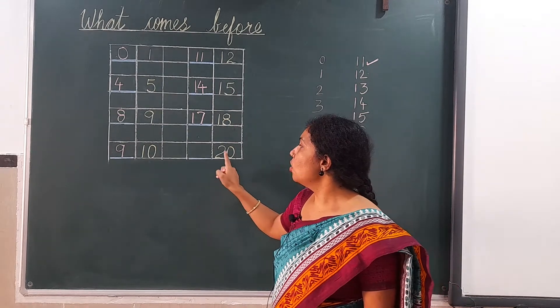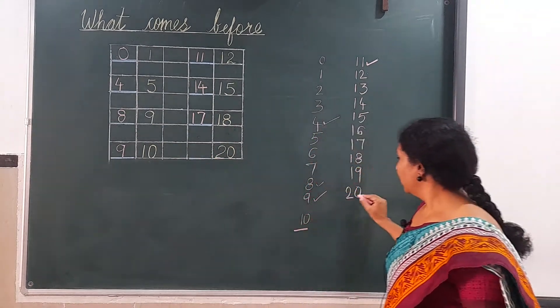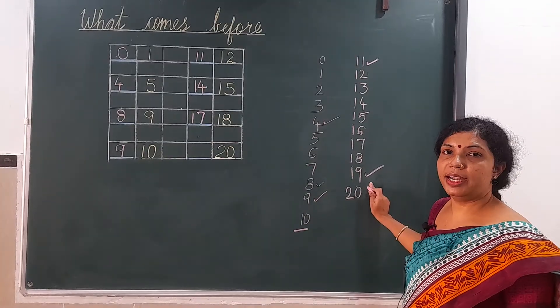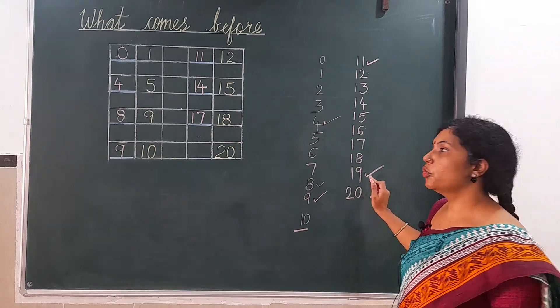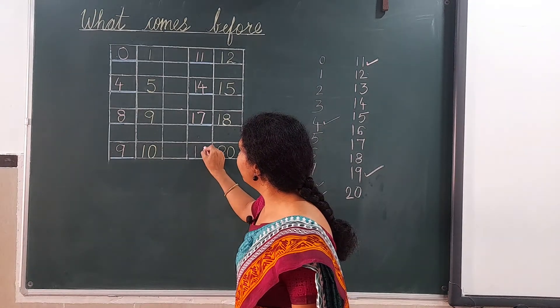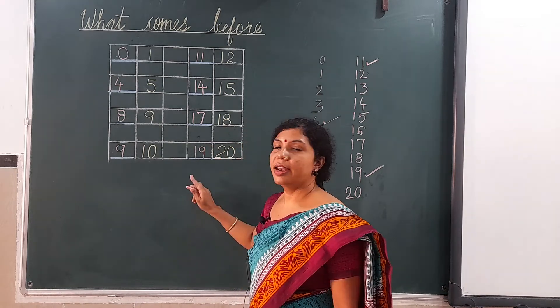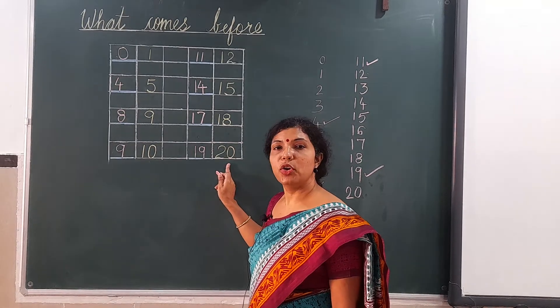Here, which number comes before 20? 19 comes before 20. So we have to write here 19. It means 19 comes before 20.